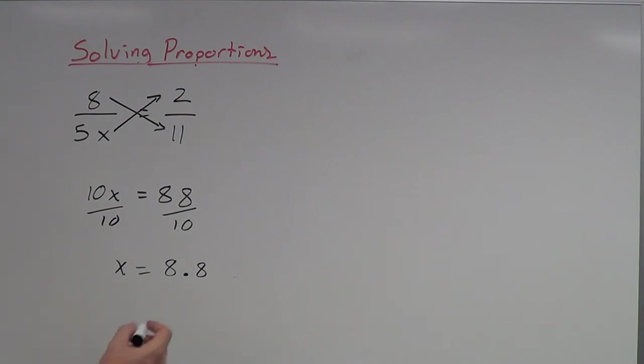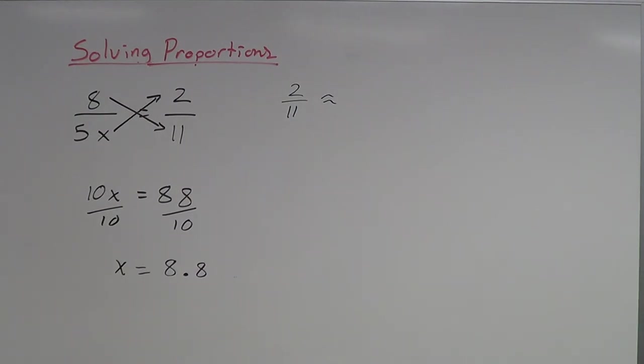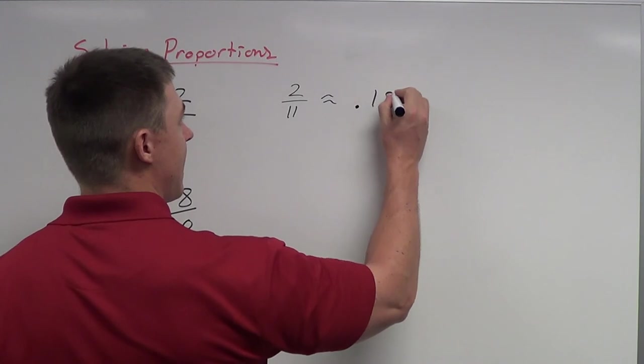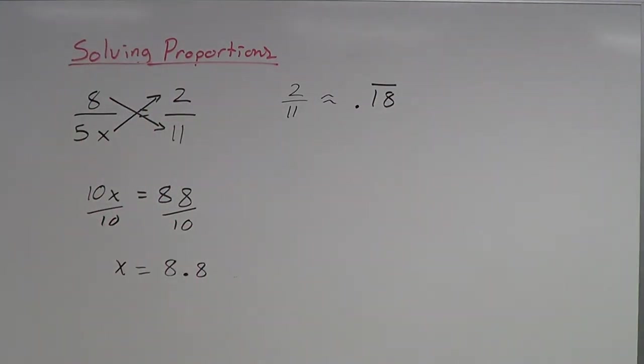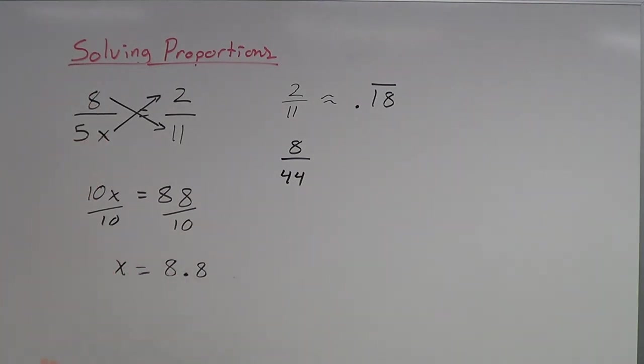So again, what we're going to do is we're going to plug this back in to see if we got this correct, to see if that is in fact the correct answer. So 2 divided by 11 is going to be .18 repeating. If you plug that into your calculator to see what that is. So on the other hand, if I take 8 divided by 5 times 8.8, I get 8 over 44.